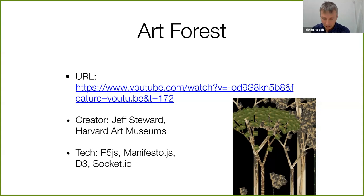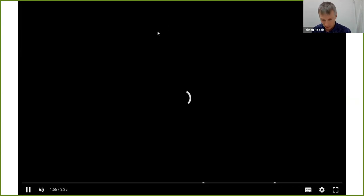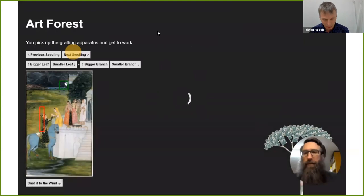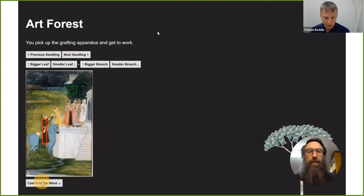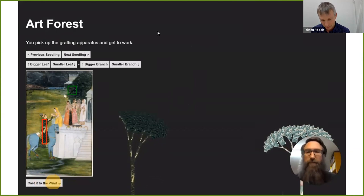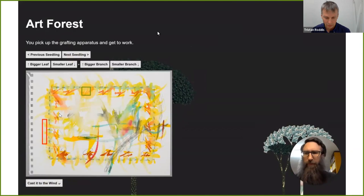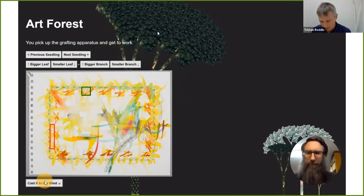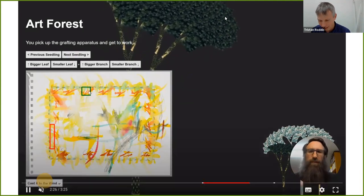This is an experimental project from Jeff Stewart of Harvard Art Museums, using their IIIF images as a source to create generative art. You can select regions from a source artwork — one representing a trunk, others representing leaves — and then a generative algorithm makes these grow into a whole forest of different trees, all created from different artworks.